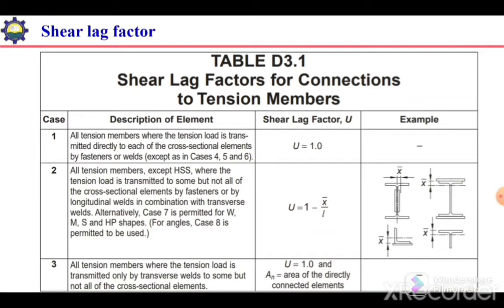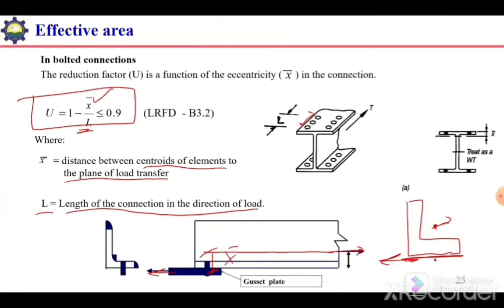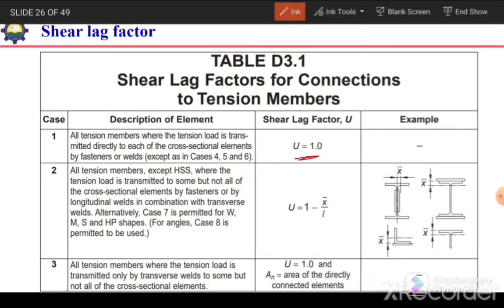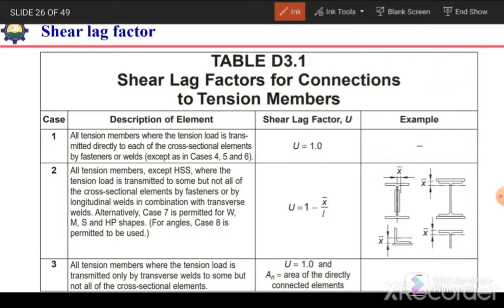It is very important to understand how to calculate the shear lag factor. In the AISC code, a table is given for different sections and connection details. Case 1: all tension members where the tension load is transmitted directly to each cross-sectional element by fasteners or weld — U = 1. For example, if both legs of an angle are connected, or both the flanges and web of a W section are connected, the shear lag factor equals 1 and the whole member has uniform stress at the section.